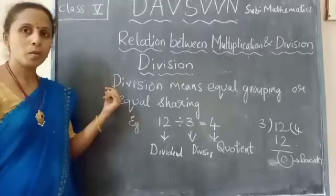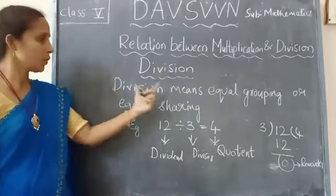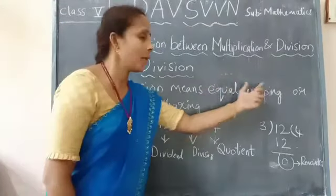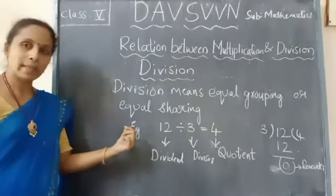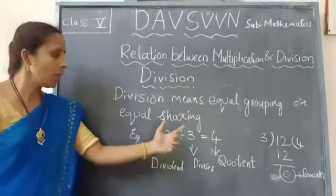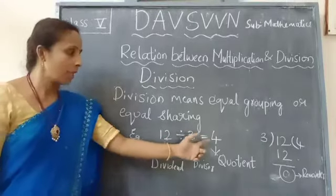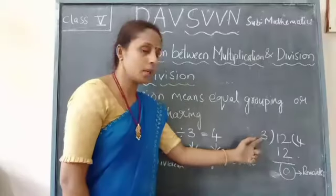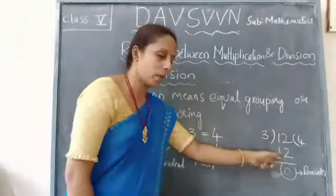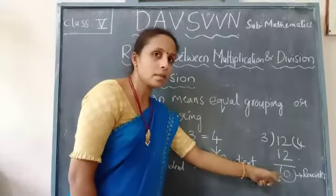Now let us revise about division. Division means equal grouping or equal sharing. Let us see an example: number 12 divided by 3 gives 4. When we divide 12 with 3, 3 fours are 12. 0 is called as remainder.